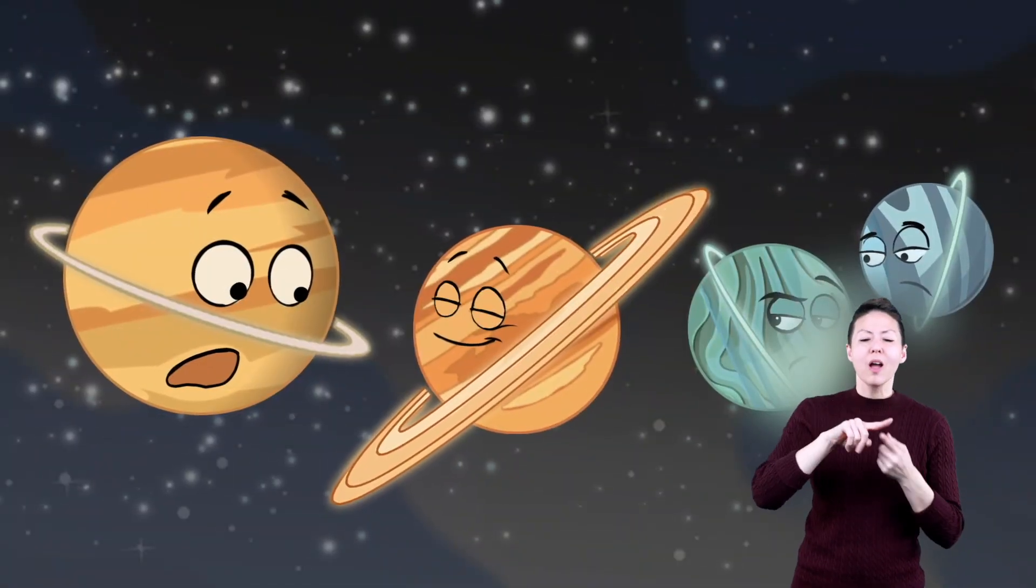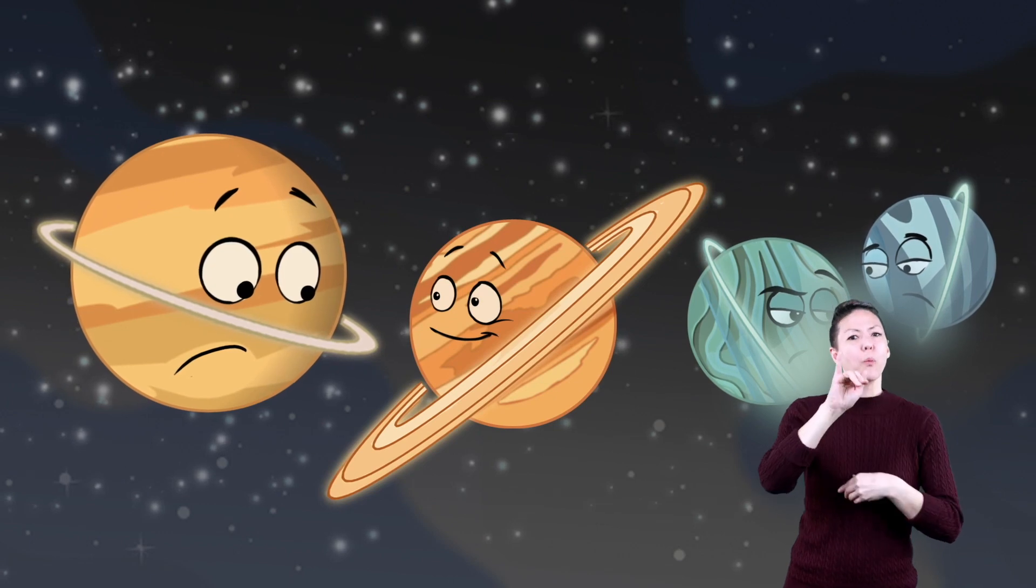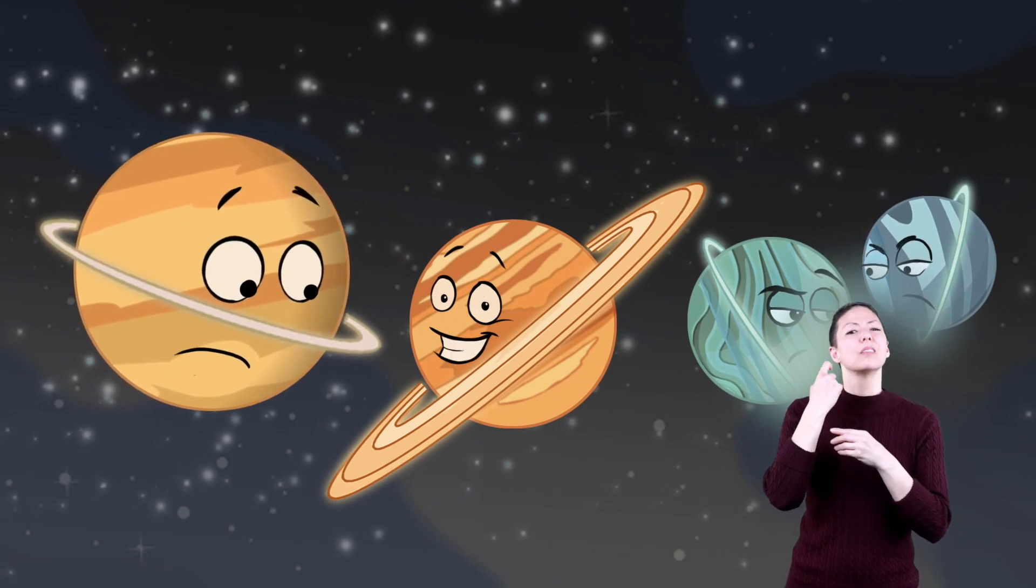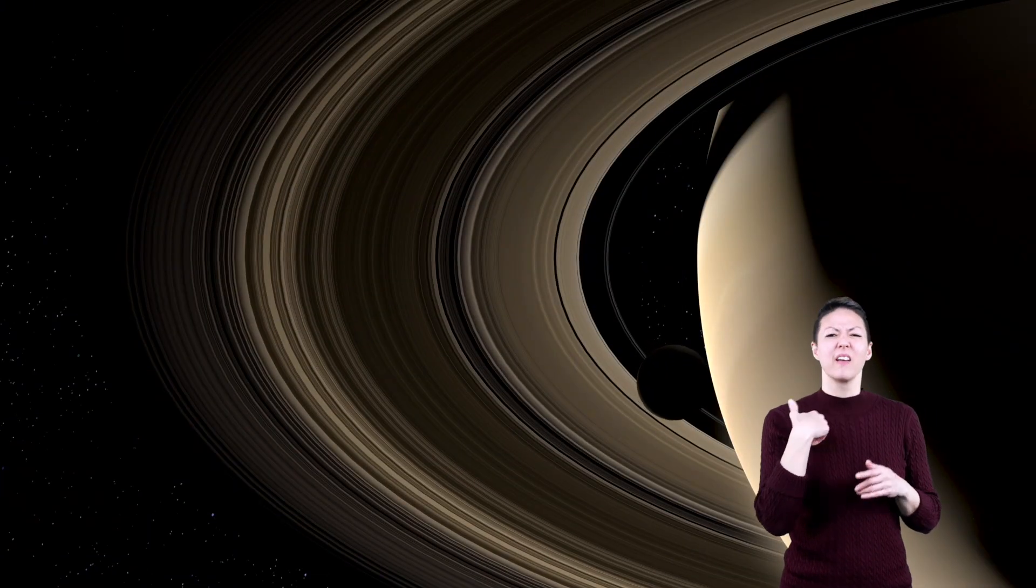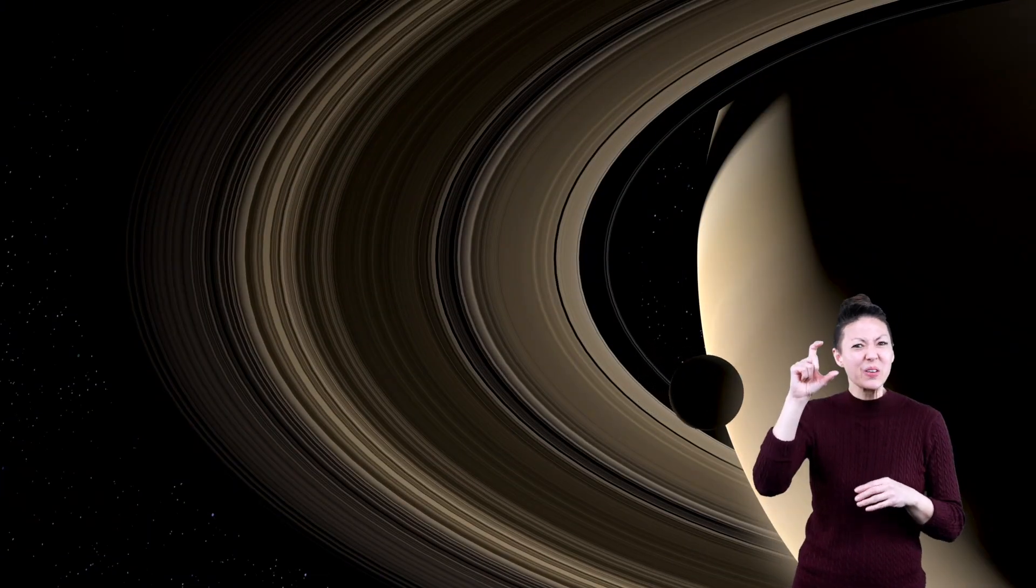But did you know that Jupiter, Uranus, and Neptune also have rings around them? But none of their rings compare to Saturn's. Rings and tons of moons, now that's a cool planet.